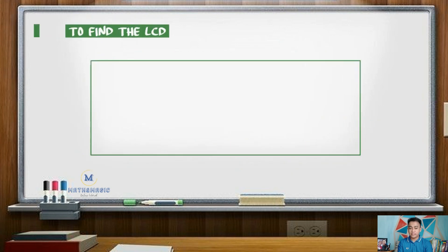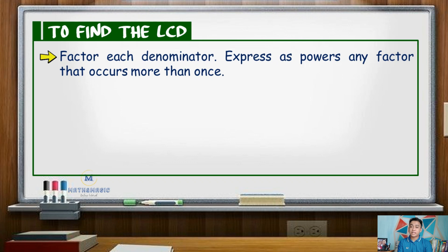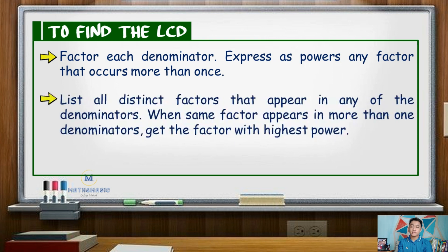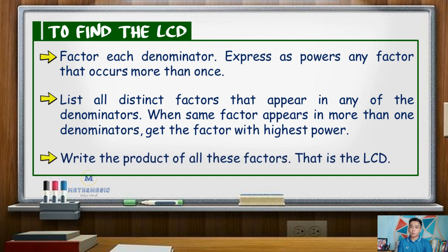To find the LCD, factor each denominator, then express as powers any factor that occurs more than once — for example, X plus 1 times X plus 1 becomes the square of X plus 1. Next, list all distinct factors that appear in any of the denominators. When the same factor appears in more than one denominator, get the factor with the highest power. Then write the product of all these factors to get your LCD.